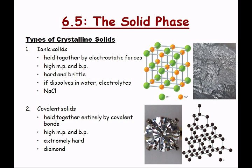Covalent solids are different from ionic solids — they're made up entirely of covalent bonds, like diamond. A diamond is a large number of covalent bonds between carbon atoms — every carbon has a tetrahedral structure around it, just like CH4. It's one big molecule — very big — held together by entirely covalent bonds, giving it a very high melting point and boiling point. It's also extremely hard.